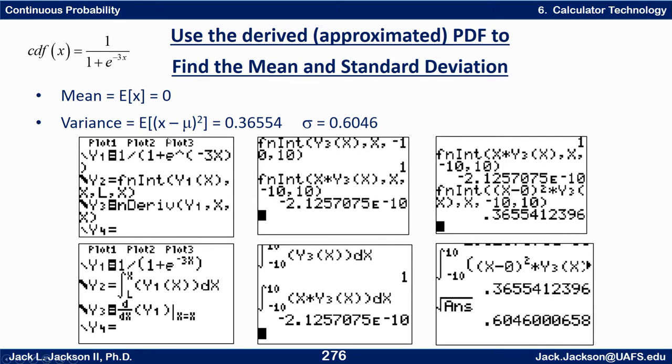And so then when I want to find the variance I integrate. So that was integrating X times the function. Y3 was my PDF. So I integrate my PDF, I should get one and that kind of helps tell me I've got limits that work. And I want to integrate X times that PDF. Same limits I should get the mean or at least real close to it at zero.